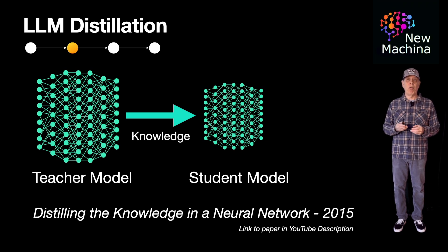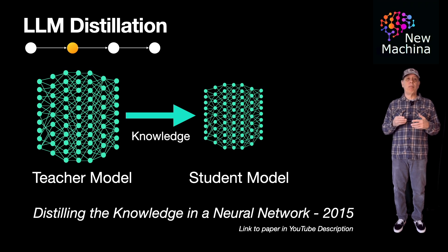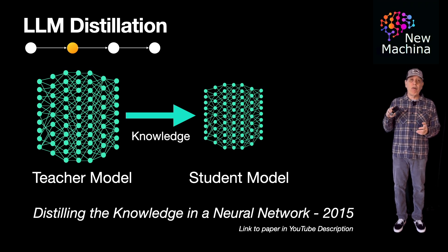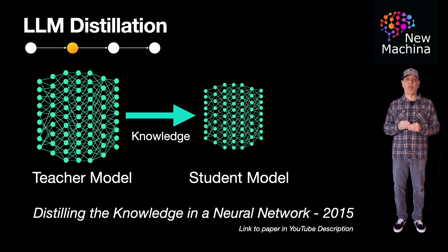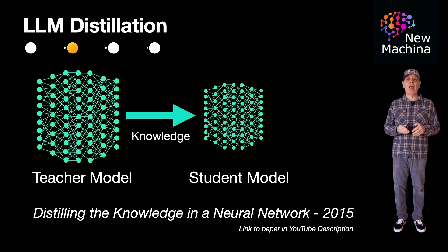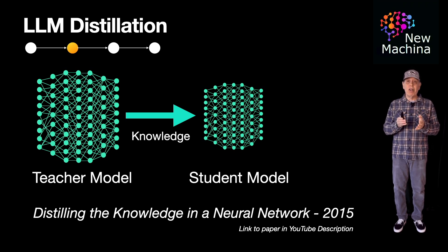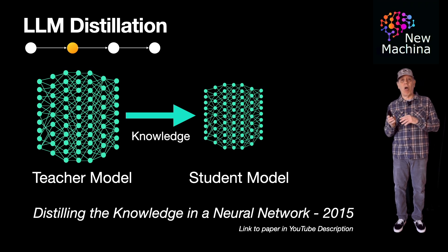For example, instead of just saying "Apple blank," the teacher might say: Apple iPhone with 90% probability, iPad with 5% probability, TV with 3% probability, or laptop with 2% probability. These soft labels help the student model understand confidence levels rather than just right and wrong answers.